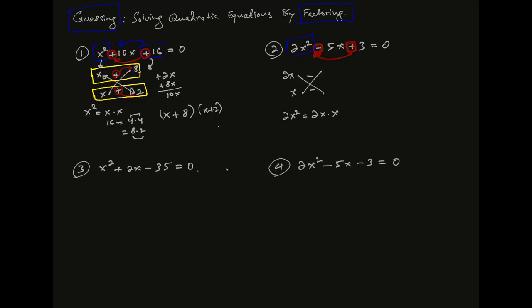Let's step back. We have to understand the 2. If we can use the 2 — 2 is a prime number. 3 is also a prime number. 3 times 1. 2x and 2x. Now, this is our first step, but we have to take a further step.